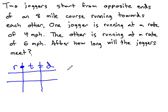In this problem, we have two joggers starting from opposite ends of an 8-mile course, and they're running towards each other.